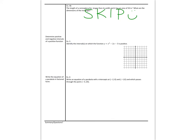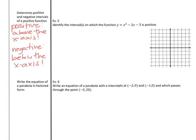We'll skip example 4b and move down to examples 5 and 6. Back in topic 1, we talked about positive and negative intervals, and we're going to do that again with quadratic functions. It's positive when the output values are above the x-axis, and negative when below. But remember, with positive and negative intervals, we're looking at x values that make it happen, not the output values.